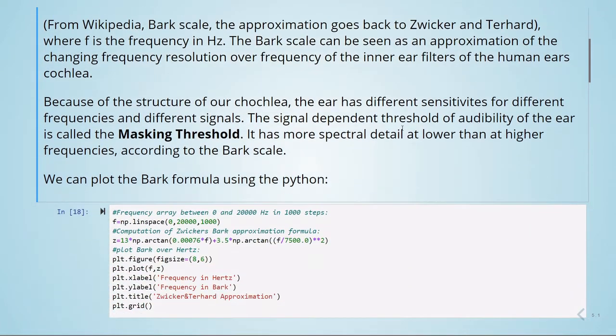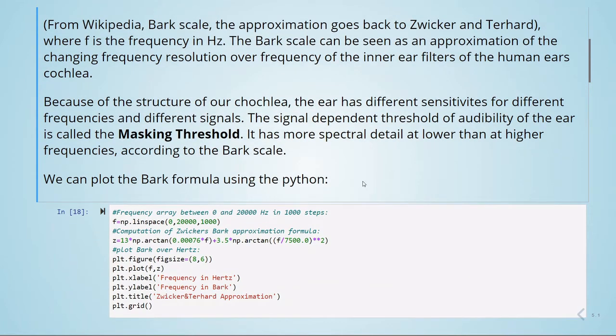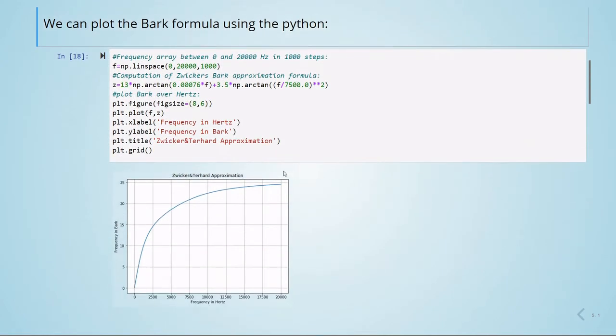We can plot this Bark formula in Python. Here we're defining a linspace from 0 to 20,000 in steps of 1,000 and computing the Zwicker-Terhardt bark approximation formula. We define this formula here in Python and then plot bark over Hertz.